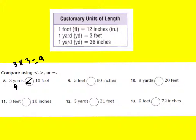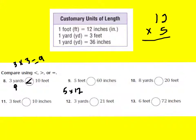Number 9 says 5 feet — is it less than, greater than, or equal to 60 inches? I know that 1 foot equals 12 inches. So if I have 5 feet, I would say 5 feet times 12, and that tells me how many inches 5 feet equals. I can solve 12 times 5: 5 times 2 is 10, carry the 1, and 5 times 1 is 5, plus 1 is 6. So 5 feet equals 60 inches — they are equal to each other.